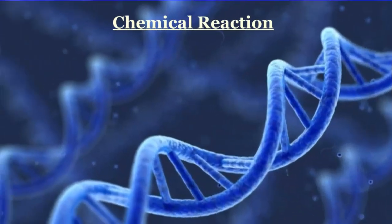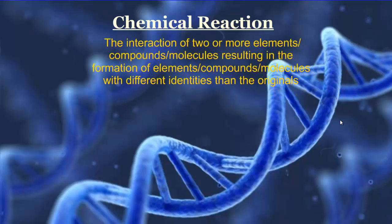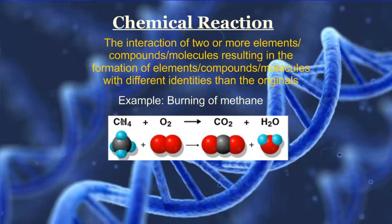Now that we have the chemistry pieces, you should understand some things you'll hear about in photosynthesis and respiration. A chemical reaction is the interaction of two or more elements, compounds, or molecules that results in the formation of new elements, compounds, or molecules with different identities than the original ones. An example is the burning of methane: CH4 plus oxygen reacts to give new products CO2 plus H2O.